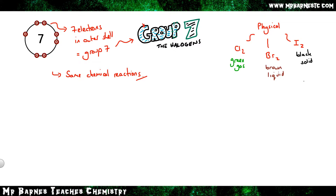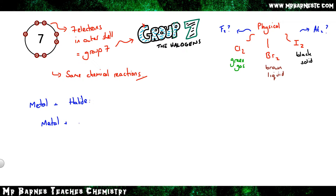You can see a trend: going from gas to solid means melting points get higher as you go down the group, so astatine is still a solid and fluorine is a gas. The first reaction to know for group 7 is between a metal and a halide — anything from group 7. A metal plus chlorine gives a metal chloride; the ending changes from -ine to -ide.